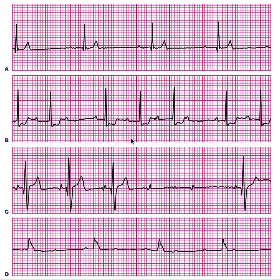You should always know about heart blocks when you look at an EKG. There are first degree, second degree, and third degree — three different types we need to learn. I want to show you four EKGs and describe how to identify the heart blocks. Look here — this is the first degree heart block.